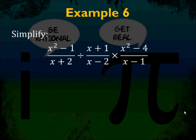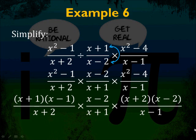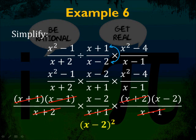Example 6: (x squared minus 1) over (x plus 2) divided by (x plus 1) over (x minus 2), times (x squared minus 4) over (x minus 1). Flip the divisor: multiply by (x minus 2) over (x plus 1). Factor: x squared minus 1 becomes (x plus 1)(x minus 1), and x squared minus 4 becomes (x plus 2)(x minus 2). Cancel: the (x plus 1)s drop out, the (x minus 1)s drop out, and the (x plus 2)s drop out — leaving (x minus 2)(x minus 2), which is (x minus 2) squared. Even with a divisor in the middle, multiply by the reciprocal.